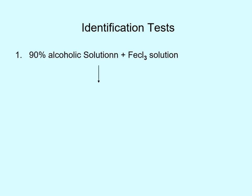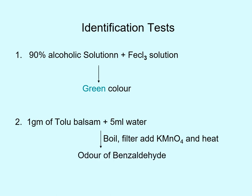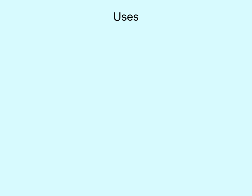The important chemical tests for Tolu Balsam are as follows. First test: if you take a 90% alcoholic solution and add ferric chloride solution to the balsamic solution, you will get a green color. Second test: if you treat 1 gram of Tolu Balsam with 5 ml of water and boil this reaction mixture, then filter it, and in the filtrate add potassium permanganate and heat, the odor of benzaldehyde can be detected.